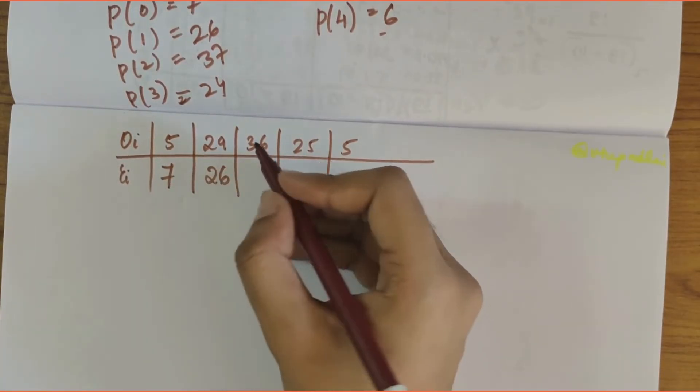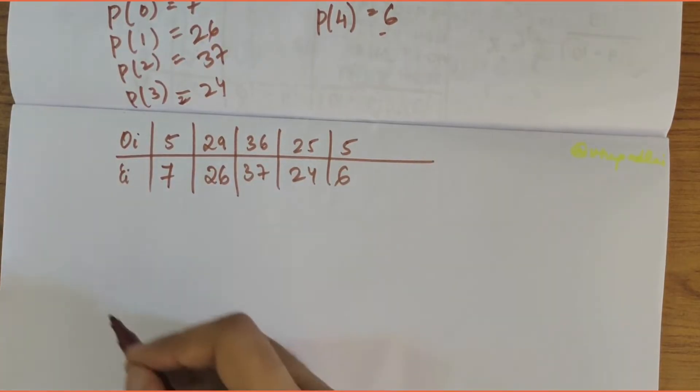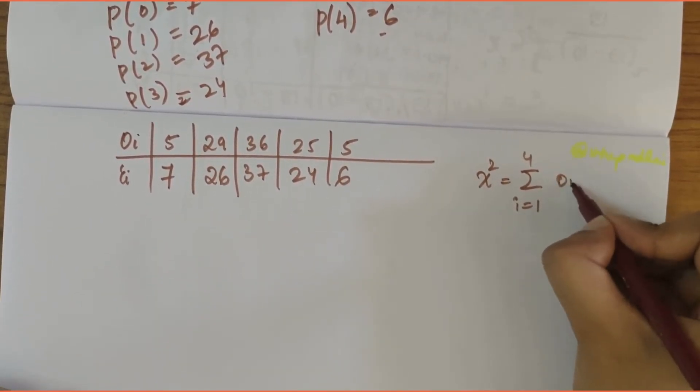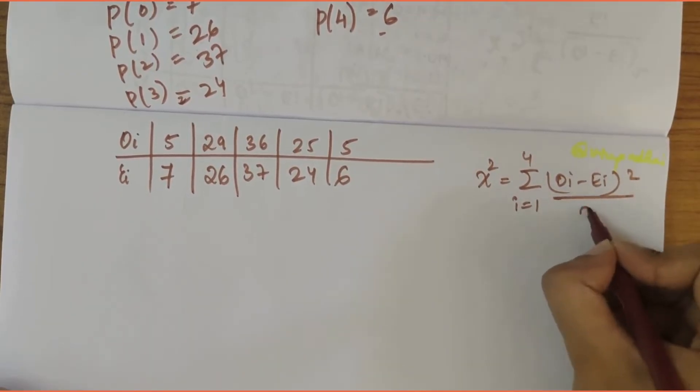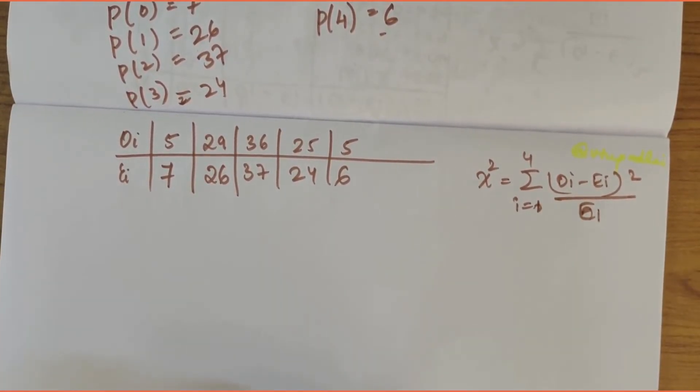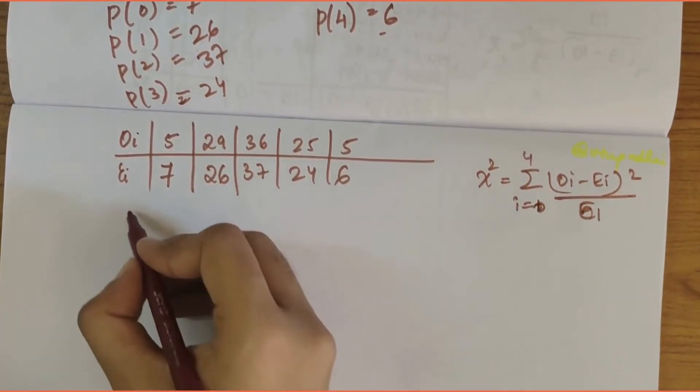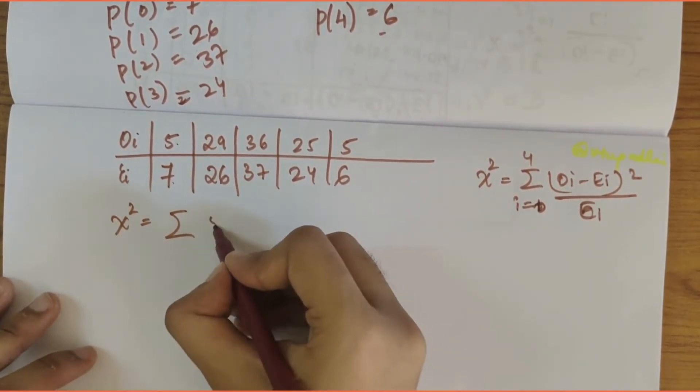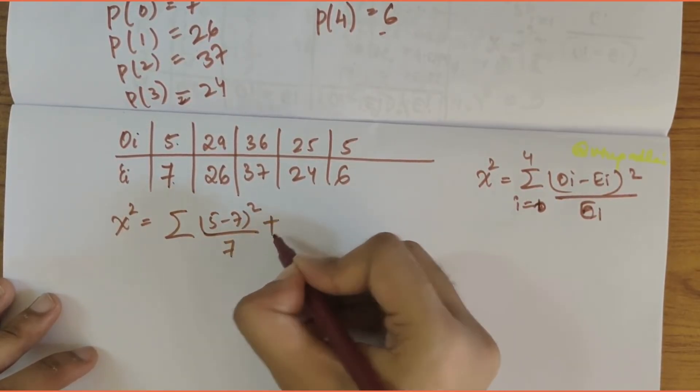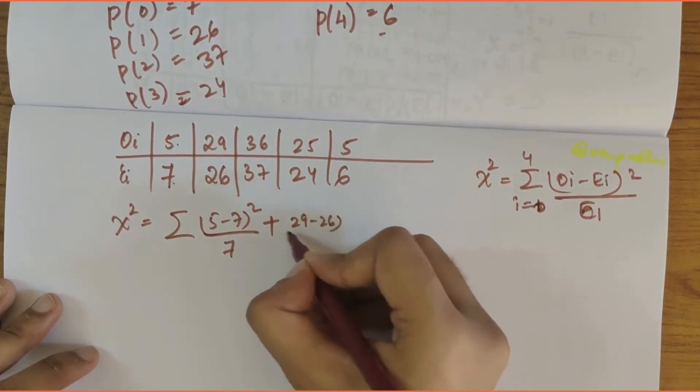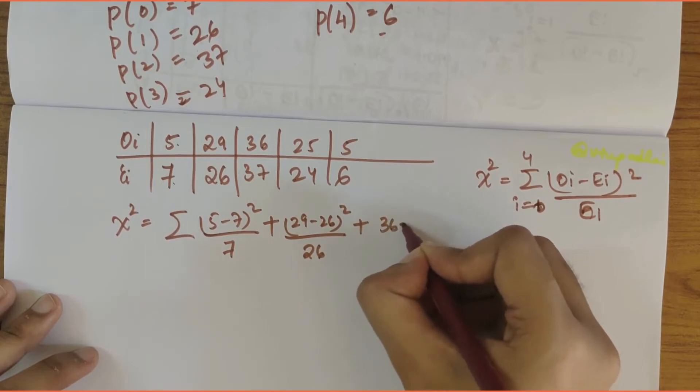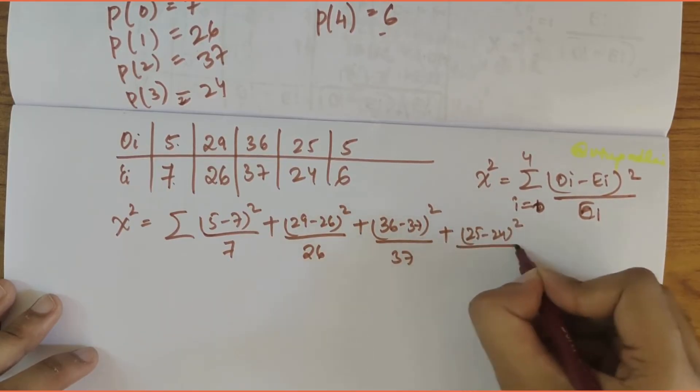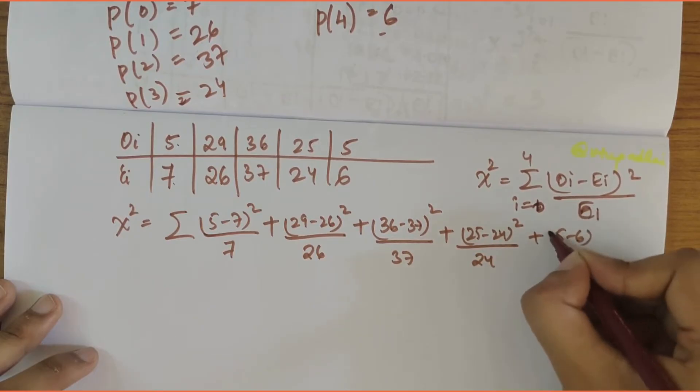Chi-square formula is summation of i equals 1 to 4 of oi minus ei whole square divided by ei. So we have to solve: summation of 5 minus 7 whole square by 7, plus 29 minus 26 whole square by 26, plus 36 minus 37 whole square by 37, plus 25 minus 24 whole square by 24, plus 5 minus 6 whole square by 6.